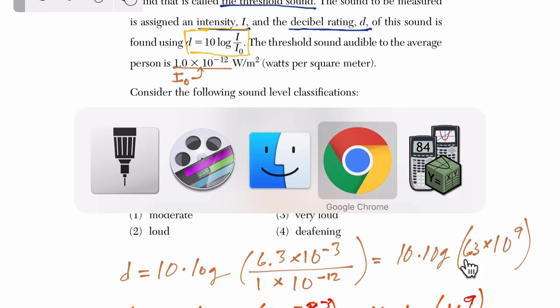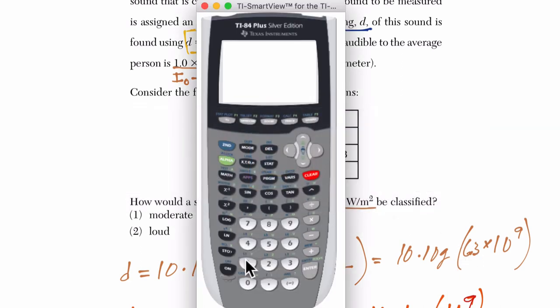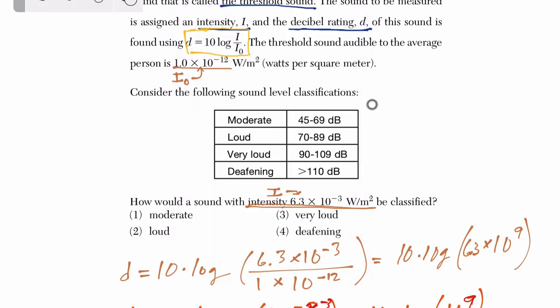OK, so we do 10 log, here's the common log button, of 6.3 times 10 to the 9th—that EE there means times 10 to the power of the number after it—enter. And there you see it's pretty close to 90, 97.99, which is in the very loud range right here.